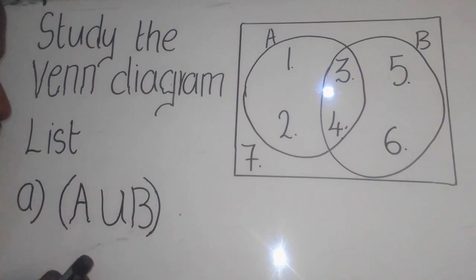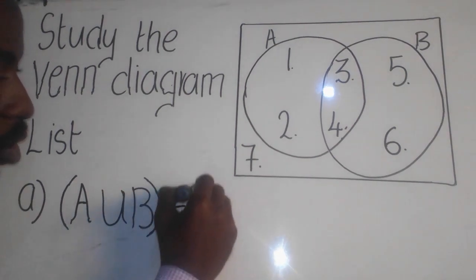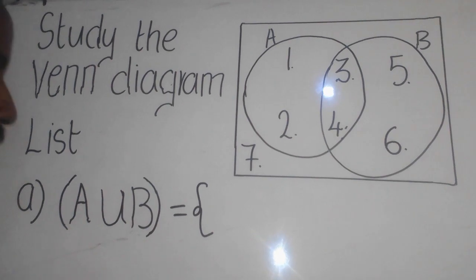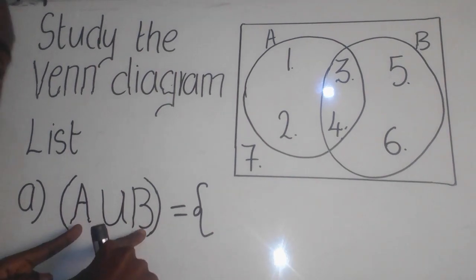So for us to answer this, I'm going to say equal there, you say open bracket like this, okay? A union B simply means everything which is found in A and in B, okay?